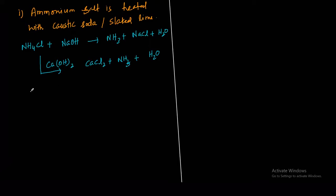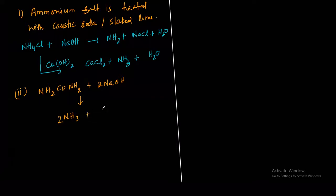Ammonia can also be prepared by urea. Write down: urea also forms ammonia when treated with caustic soda. Urea is NH2CONH2, and when treated with NaOH it forms two molecules of NH3 plus sodium carbonate (Na2CO3).